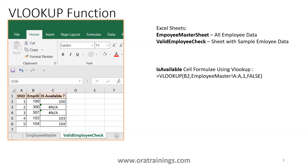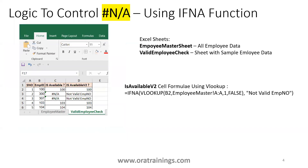For some records I get the value back, but for others I get #N/A — that means the value is not available in the master list. We can handle this using the IFNA function. With IFNA, whenever the result is #N/A, we can display something like 'not valid employee' instead.